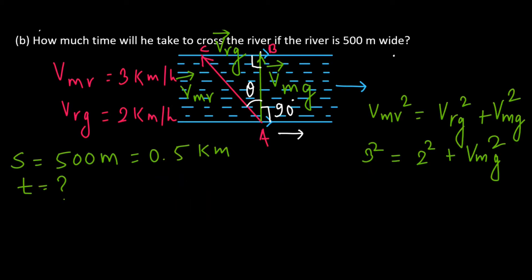Now substitute the values. From this, you will obtain V_mg equal to root 5 kilometers per hour.